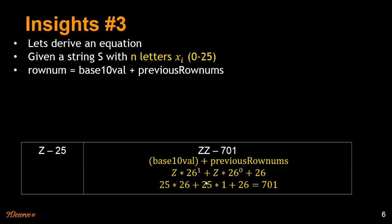That will give you 701. So let's try to derive an equation from this. So given a string S with n letters xi, where each letter is denoted in the range of 0 to 25, we need to find out a row number by using the formula base 10 value plus previous row numbers.